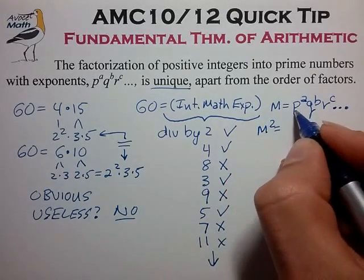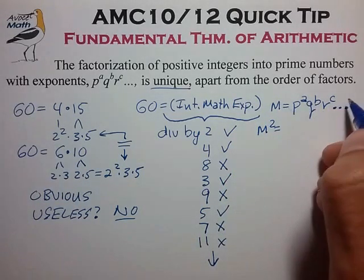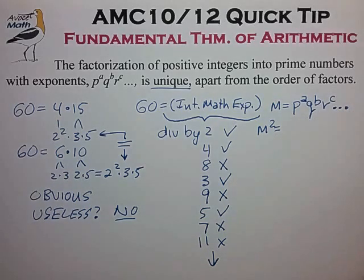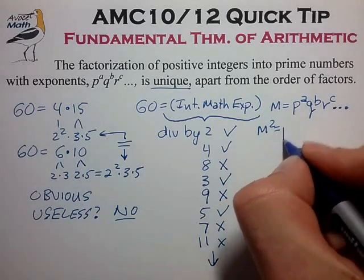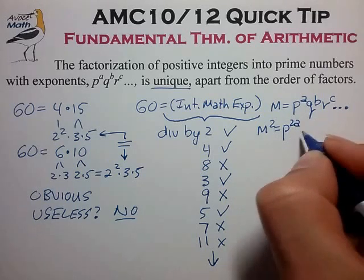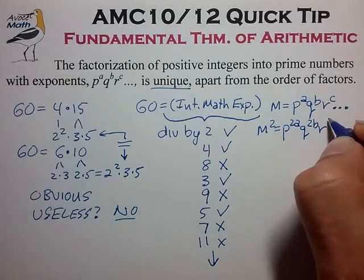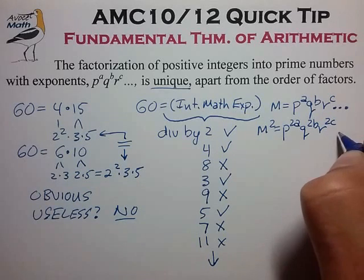So let's take this expression and square it and bring the exponent of 2 down into the individual exponents of the prime numbers. And we find that m squared is equal to p to the 2a, q to the 2b, r to the 2c, and so on.